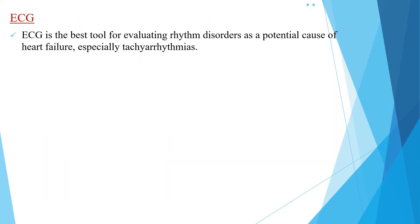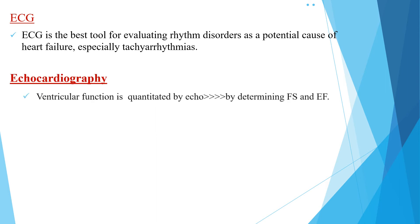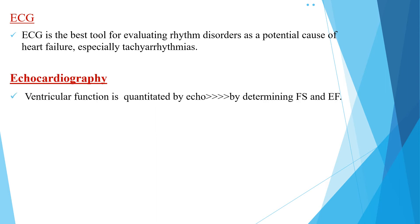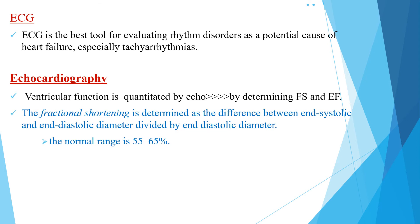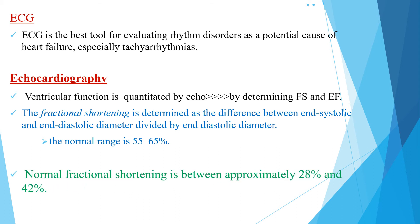The other diagnostic tool is ECG. ECG is the best tool for evaluating rhythm disorders as a potential cause of heart failure, especially tachyarrhythmias. Echocardiography is the best imaging method for identifying and diagnosing the cause of heart failure. Ventricular function is quantified by echocardiography by determining fractional shortening and ejection fraction. Fractional shortening is the difference between end-diastolic and end-systolic diameter divided by end-diastolic diameter; normal ejection fraction is 55–65% and normal fractional shortening is approximately 28–42%.